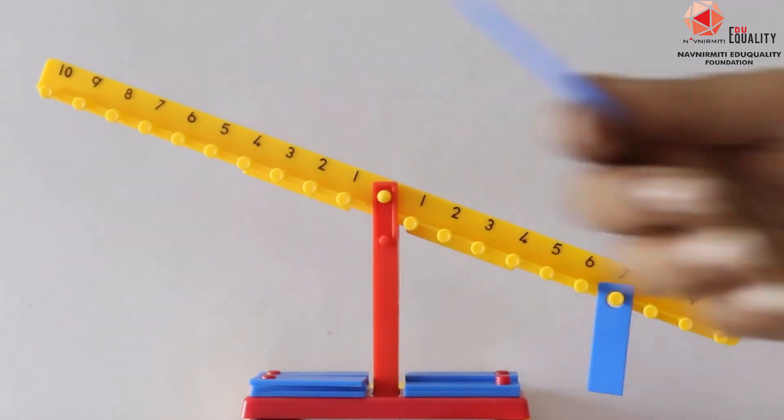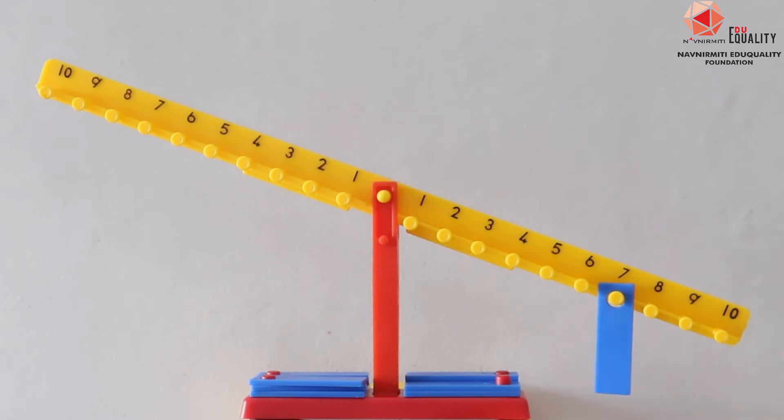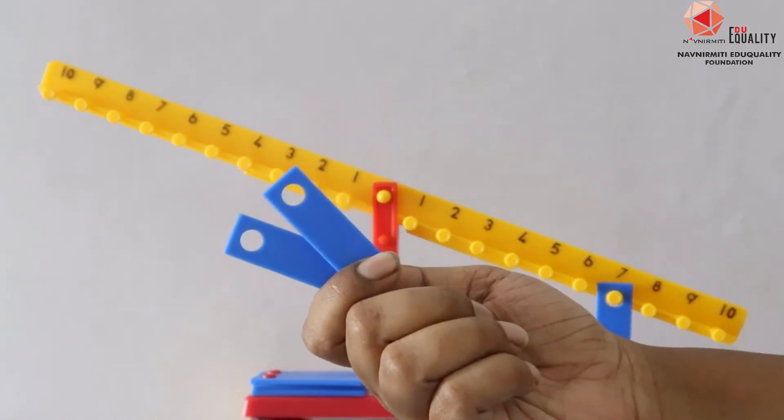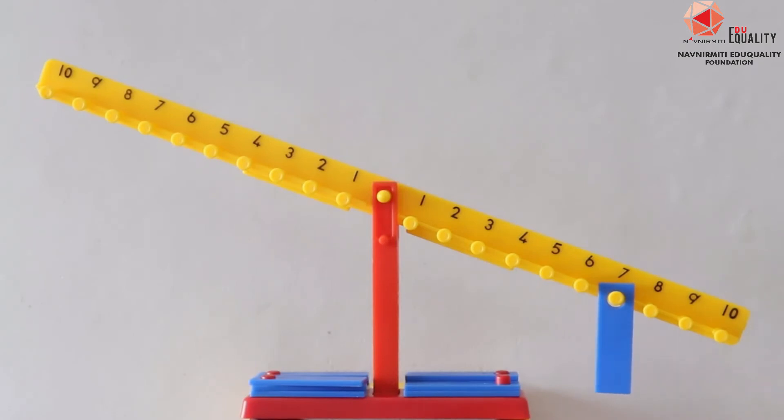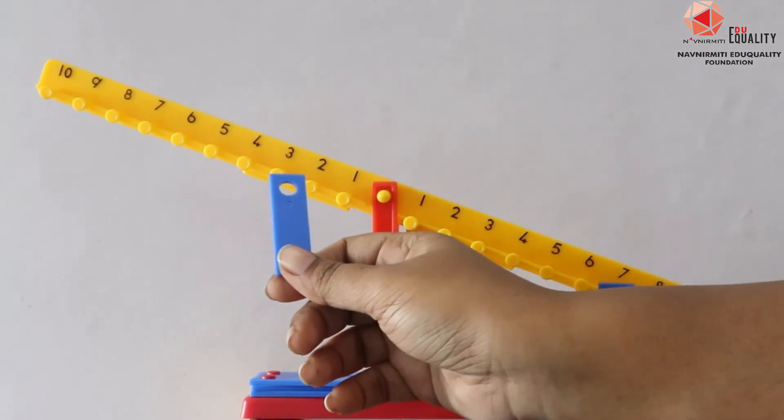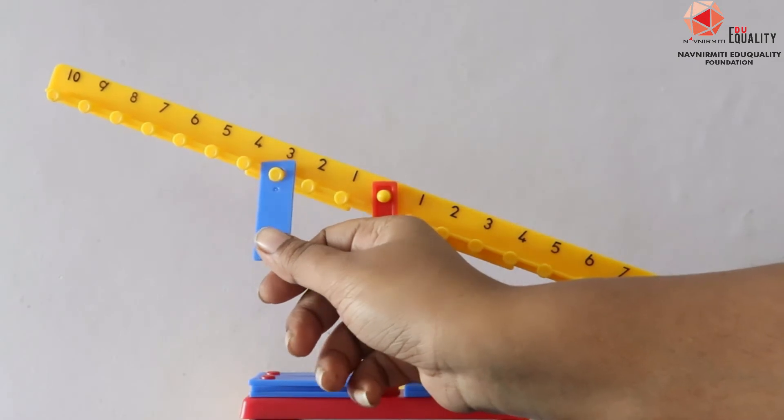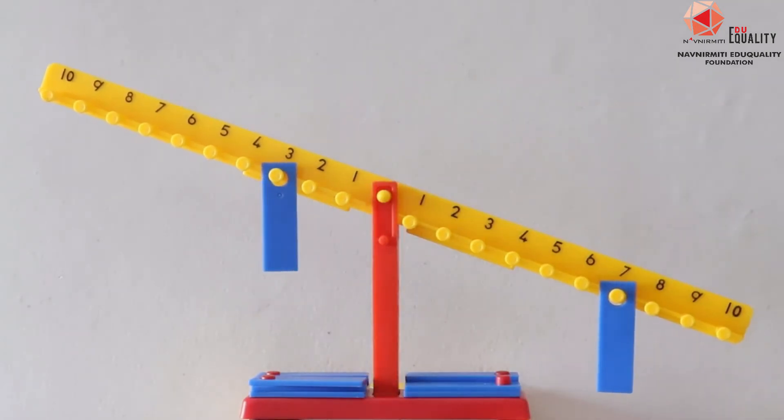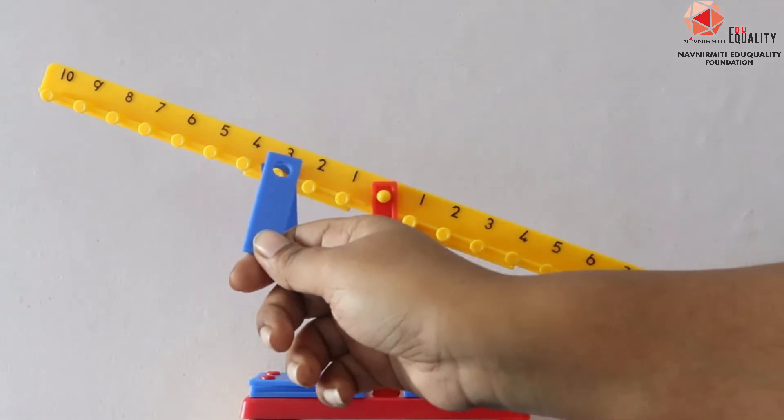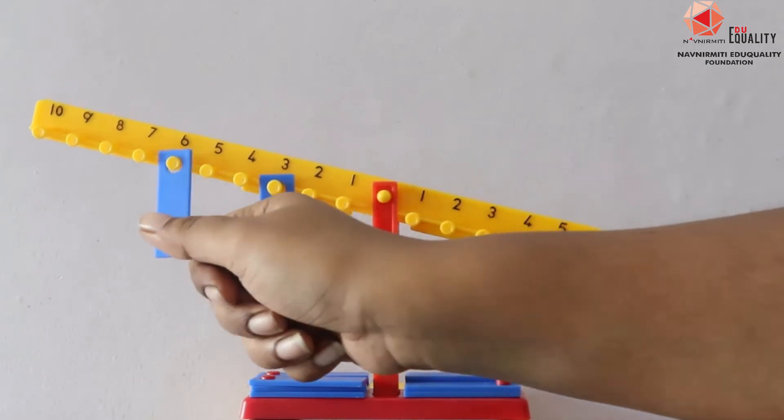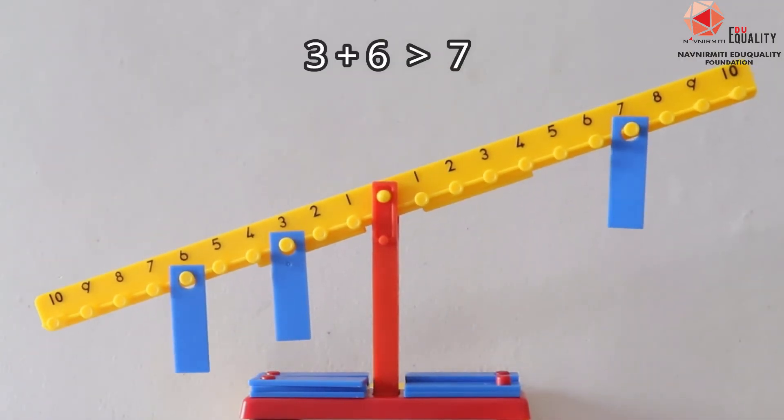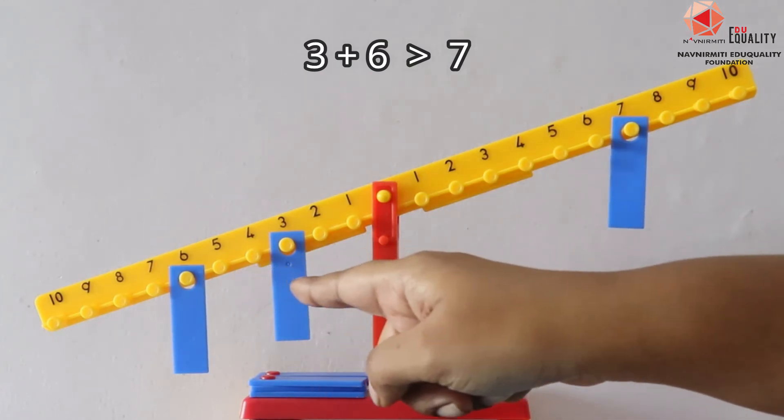Now this time instead of taking one weighing strip to balance number 7, let me take two weighing strips. To balance it, let me place one strip on number 3 and another strip on number 6. So here we can see that 3 plus 6 is greater than 7 as the left arm falls down.